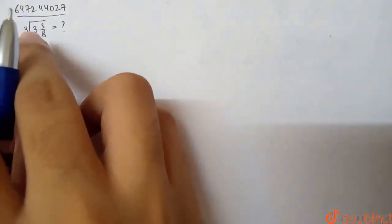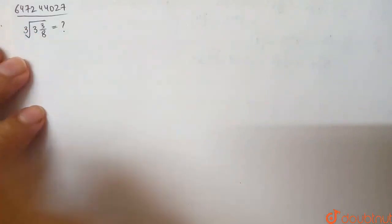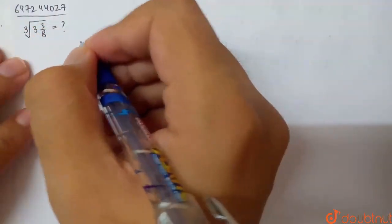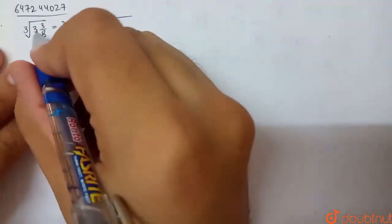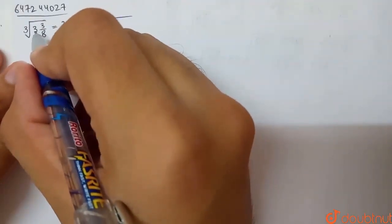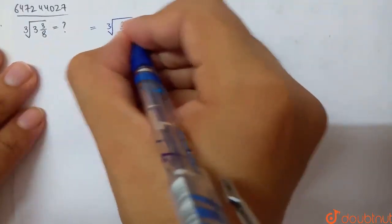In this question, find the value of the cube root of 3 and 3 by 8. We have to open it up and write it. This is the cube root of, cross multiply, 8, 3's are 24 plus 3 is 27 by 8.